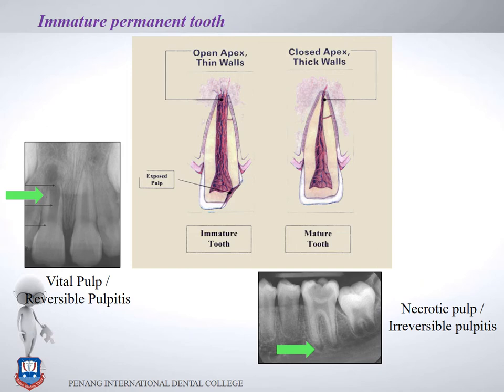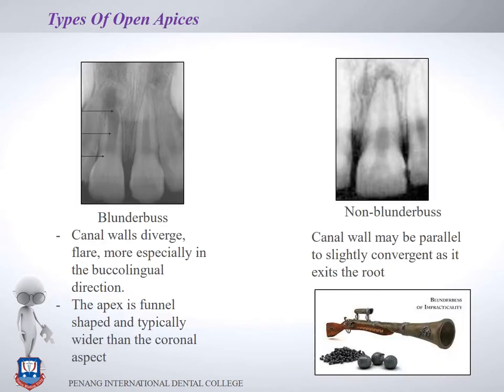In both these cases the root apex was wide open. The term used for such cases is immature permanent teeth — meaning the root apex is open, has not formed, and there is no apical closure. When we talk about an immature tooth we look not only at root length but also root thickness. An immature permanent tooth can be associated with a vital pulp or reversible pulpitis, or it can be seen in a molar with deep caries where the root apex is also open.